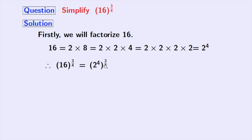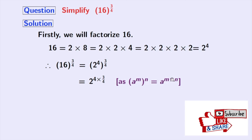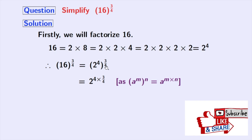This can be rewritten as 2 to the power 4 times 3 by 4, using the rule that (a^m)^n equals a to the power m times n. Here a is 2, m is 4, and n is 3 by 4.